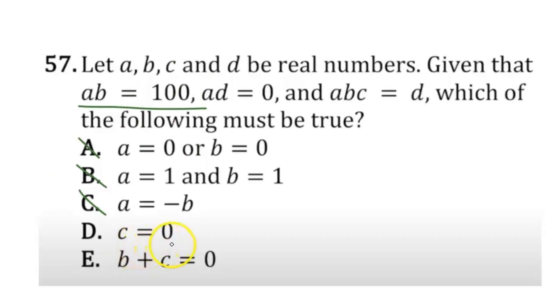D says c equals 0. So this one's really interesting because we already know that we have these other expressions, and so we can match it up and see if it's true. Because a times b equals 100, we know that here a times b must be equal to 100, so 100c equals d. And then we can actually use this second expression, a times d equals 0.